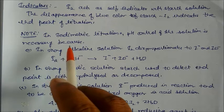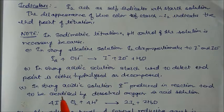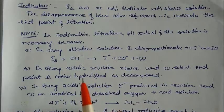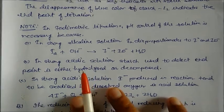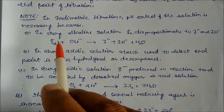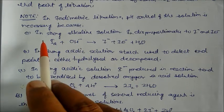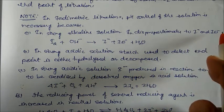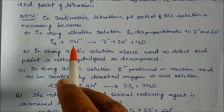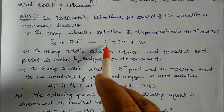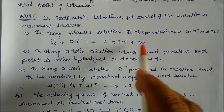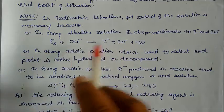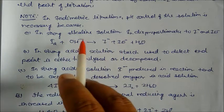During iodometric titrations, pH control of the solution is very important; otherwise, different side reactions may occur. In strongly alkaline solutions, iodine disproportionates to iodide (I⁻) and iodate (IO⁻). So you should not keep the solution too strongly alkaline.